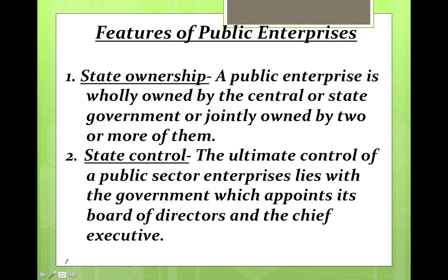Point number one is state ownership. A public enterprise is owned, controlled, and managed by the central or the state government, or it can be jointly owned by two or more of them. State ownership means the ownership, management, and control is held in the hands of the central government, state government, or jointly by two or more of them.